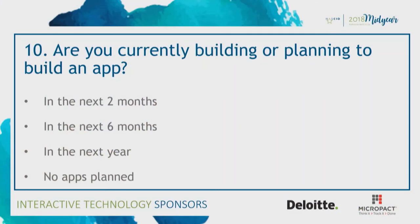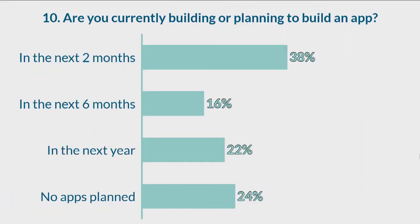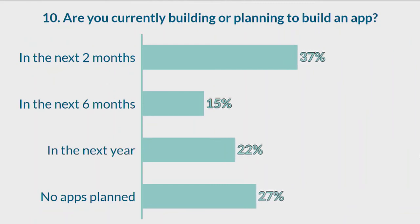Let's move to the next poll question: are you currently building or planning to build an app, whether citizen-facing or internally-facing? There's an interesting juxtaposition with how many people are doing user-centered design. The grants and licensing portfolio, which developed the plant inspector application, currently has a dozen applications under development. There's a lot of activity in this space.